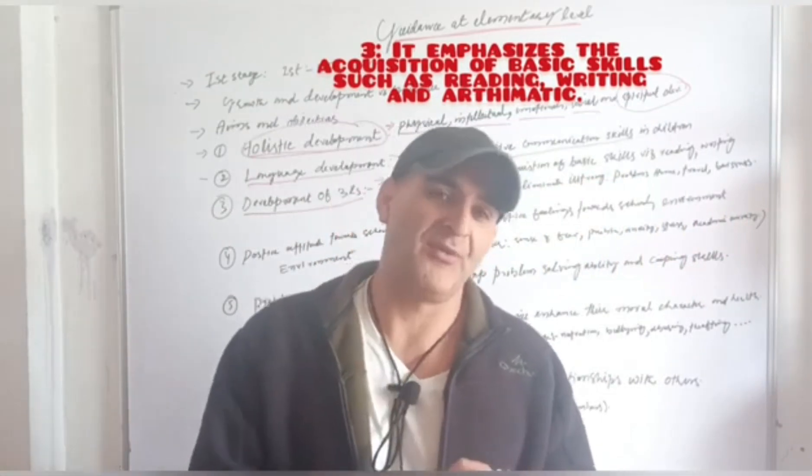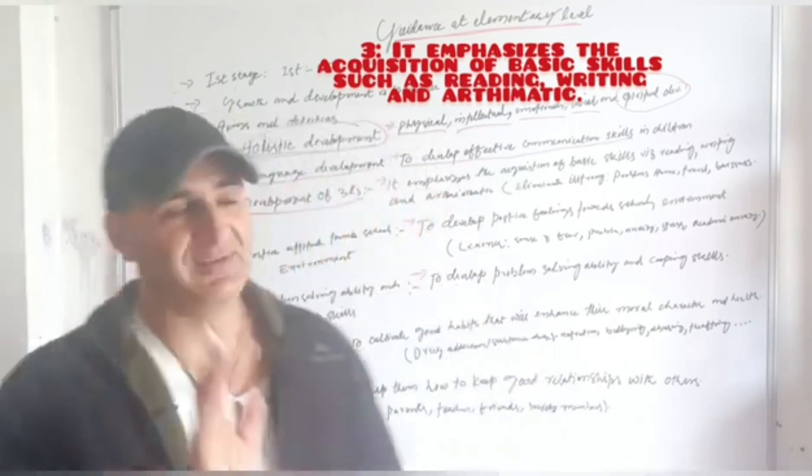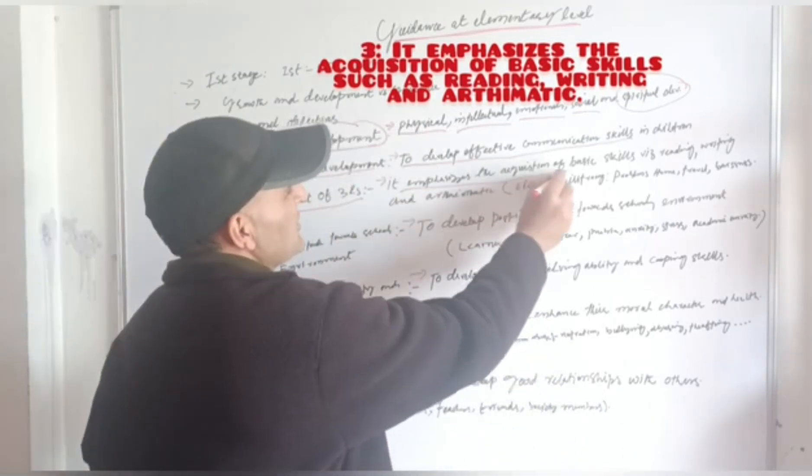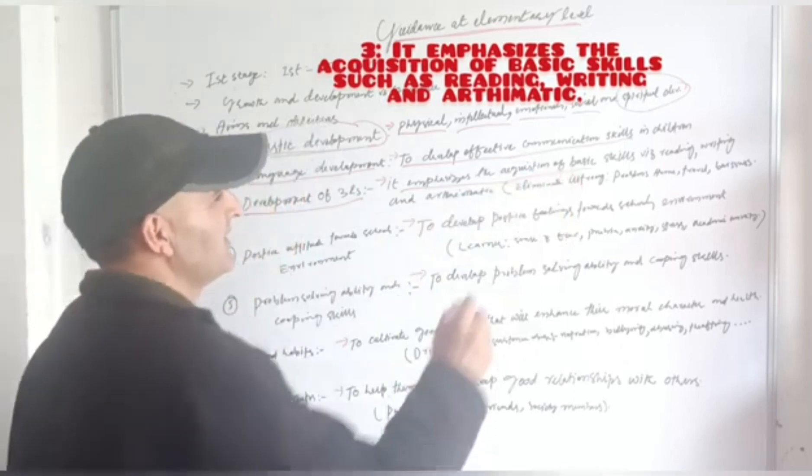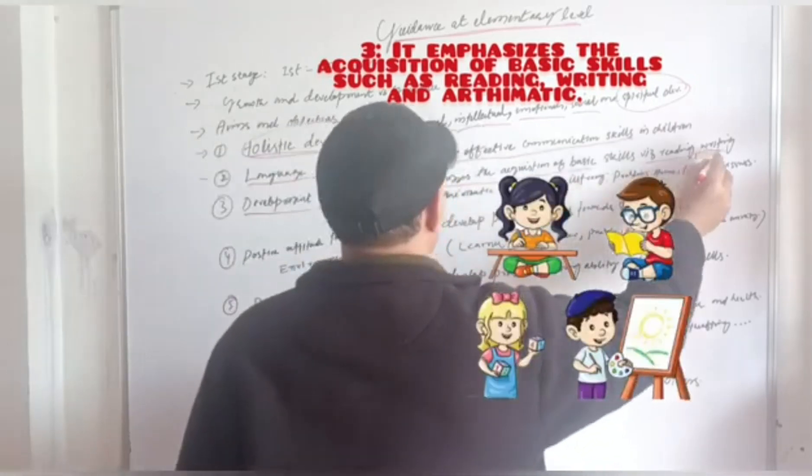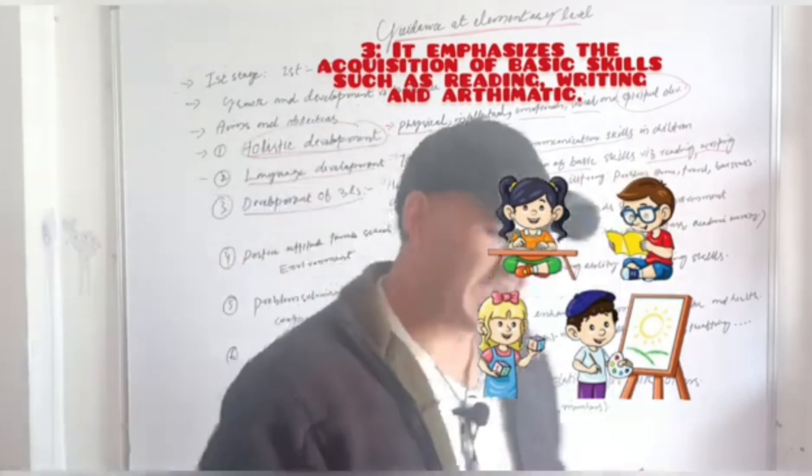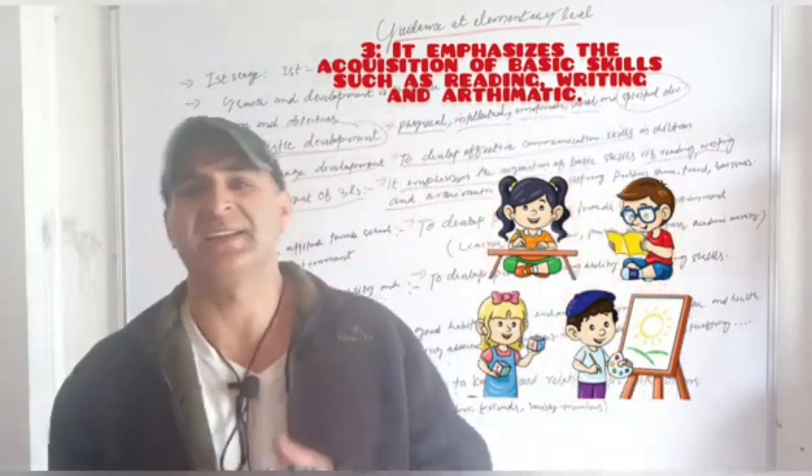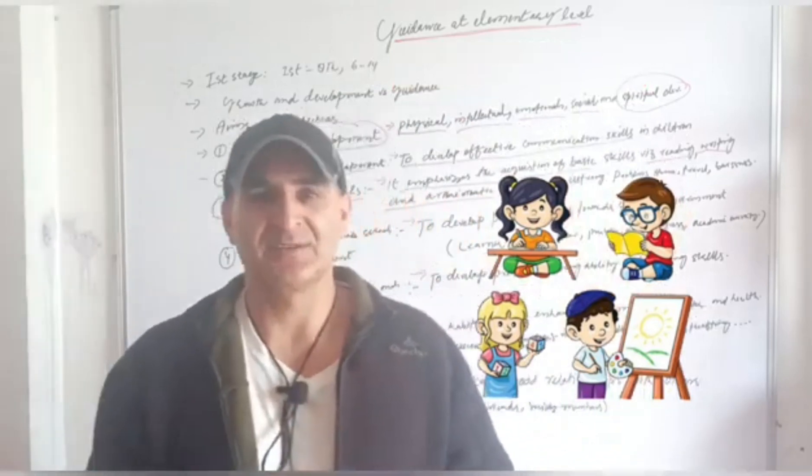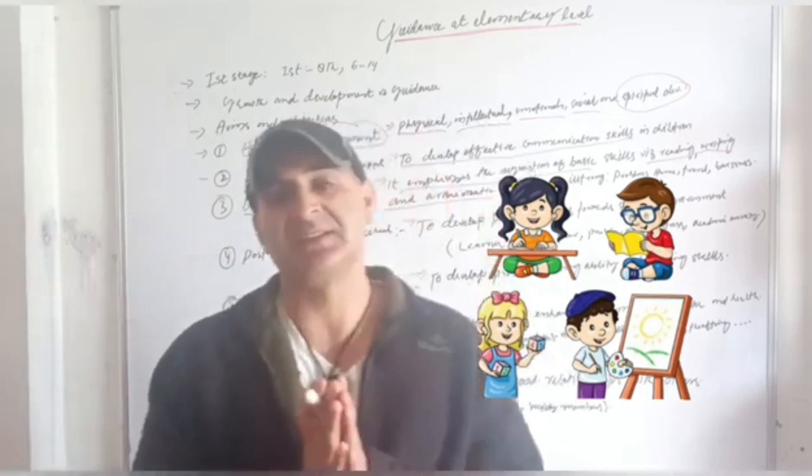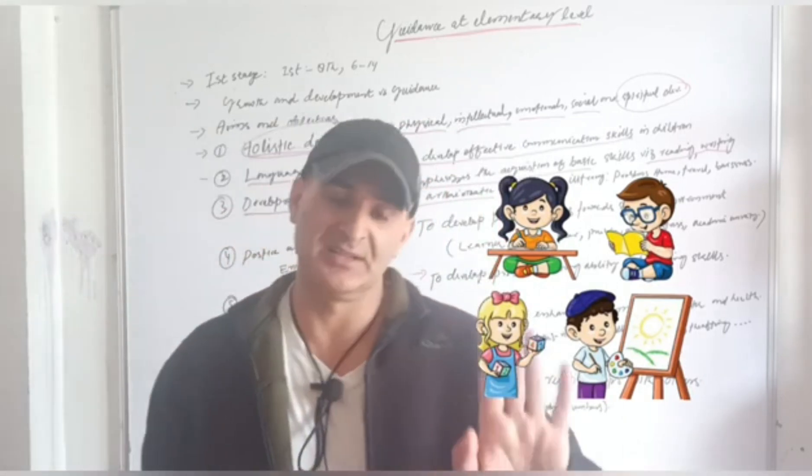The third aim of guidance at elementary level is true. It emphasizes the acquisition of basic skills with reading, writing and arithmetic. So far as 3RS is concerned, its purpose is to develop the reading competence, writing and arithmetic ability in the learners.